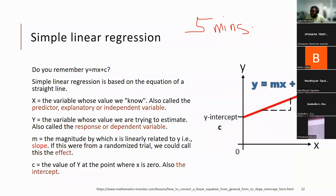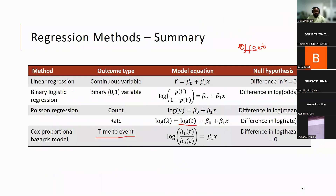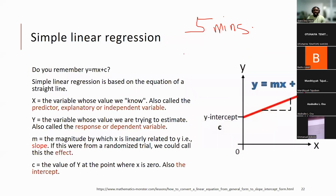Let's go back to the regression slides. Before the break, we were looking at different types of regression methods: linear, binary logistic, Poisson, Cox, and people gave examples. One thing I want to quickly point out is that from physics class, the equation of a straight line is the basis for linear regression, and also the basis on which we understand and interpret the rest of the regression methods. You have numbers on a scatter plot and you're trying to find the line of best fit.